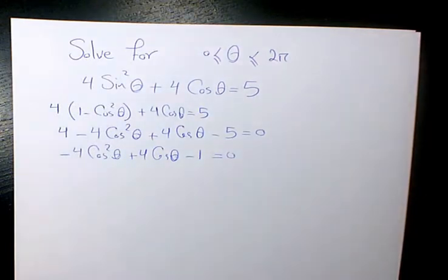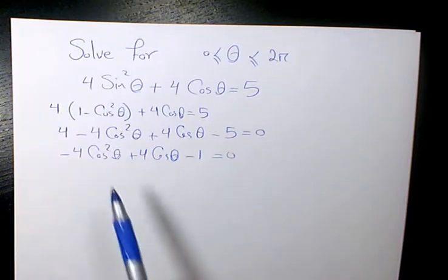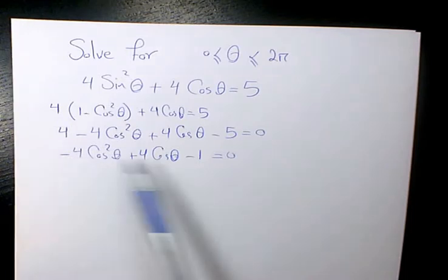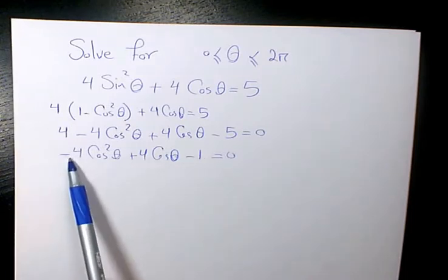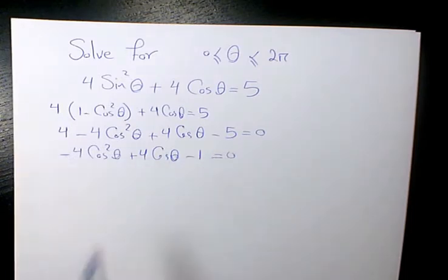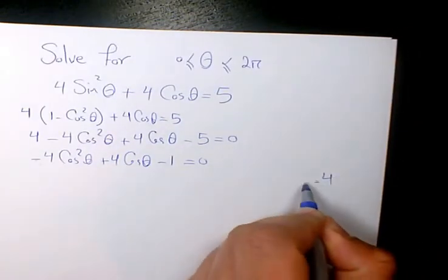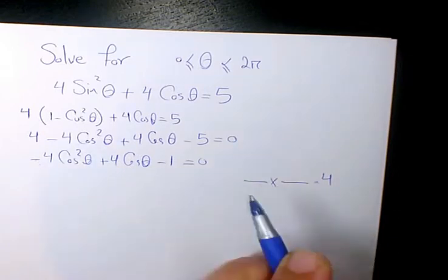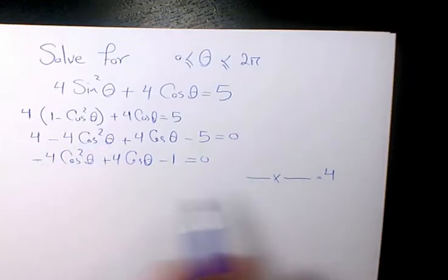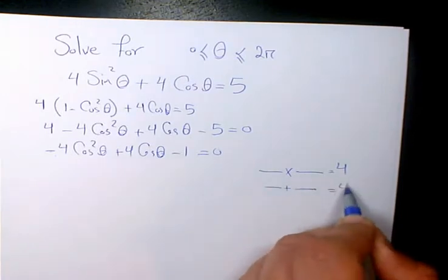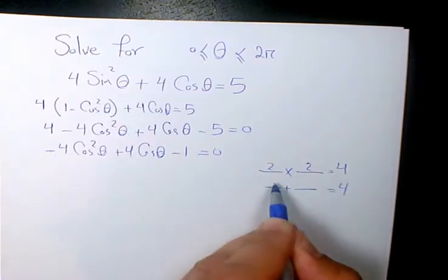Now I want to solve this quadratic equation. I'm going to use the AC method, where I multiply A and C: negative 4 times negative 1 equals positive 4. So I need to find two numbers that multiply to 4 and add to positive 4 — that's 2 and 2.